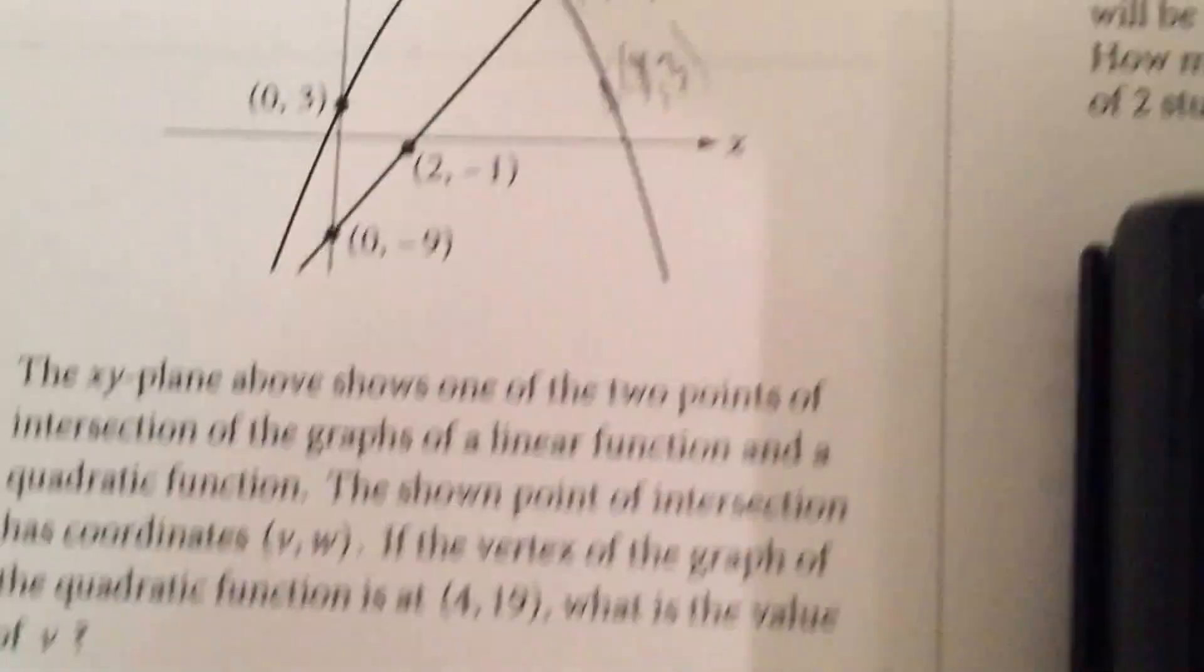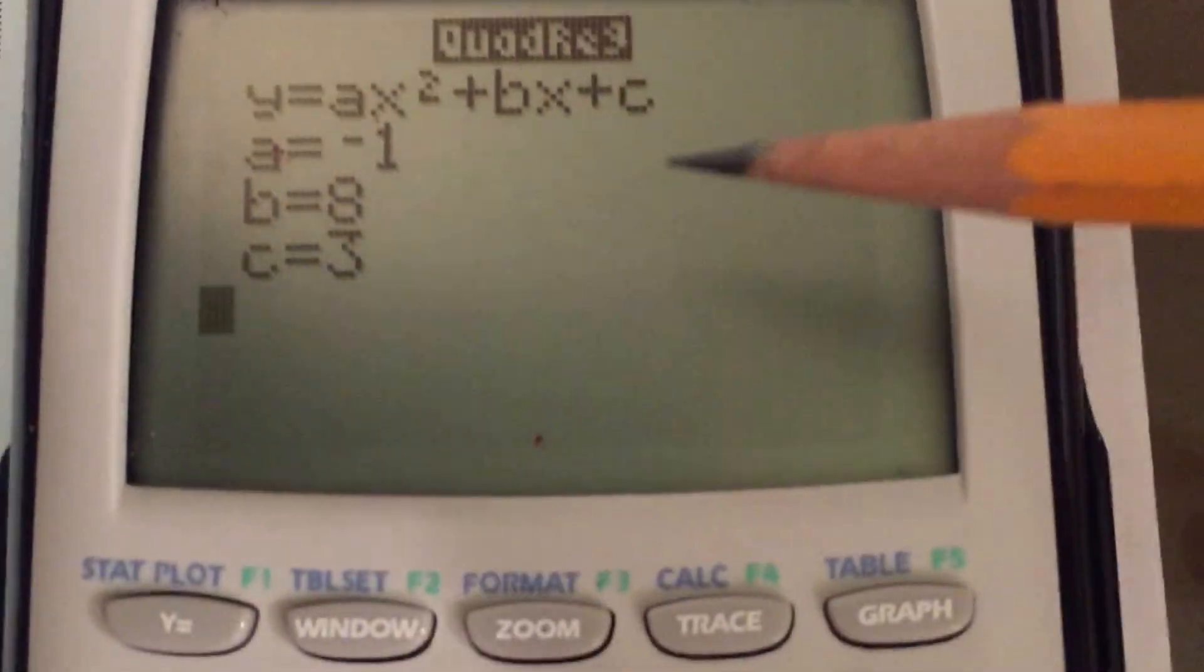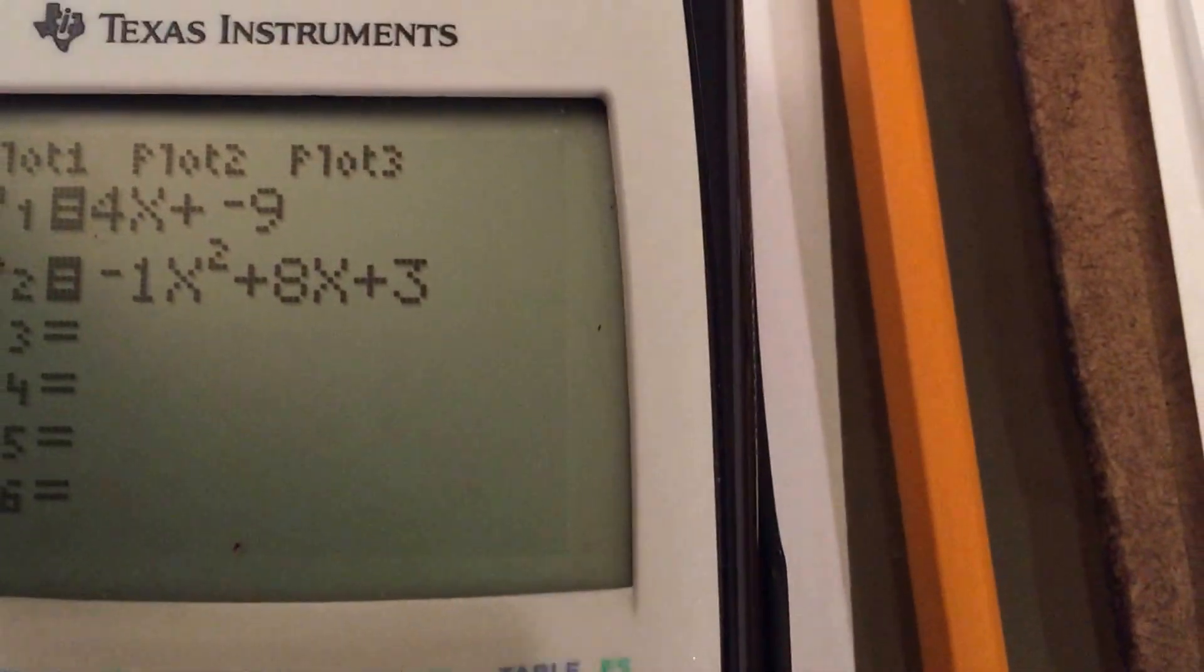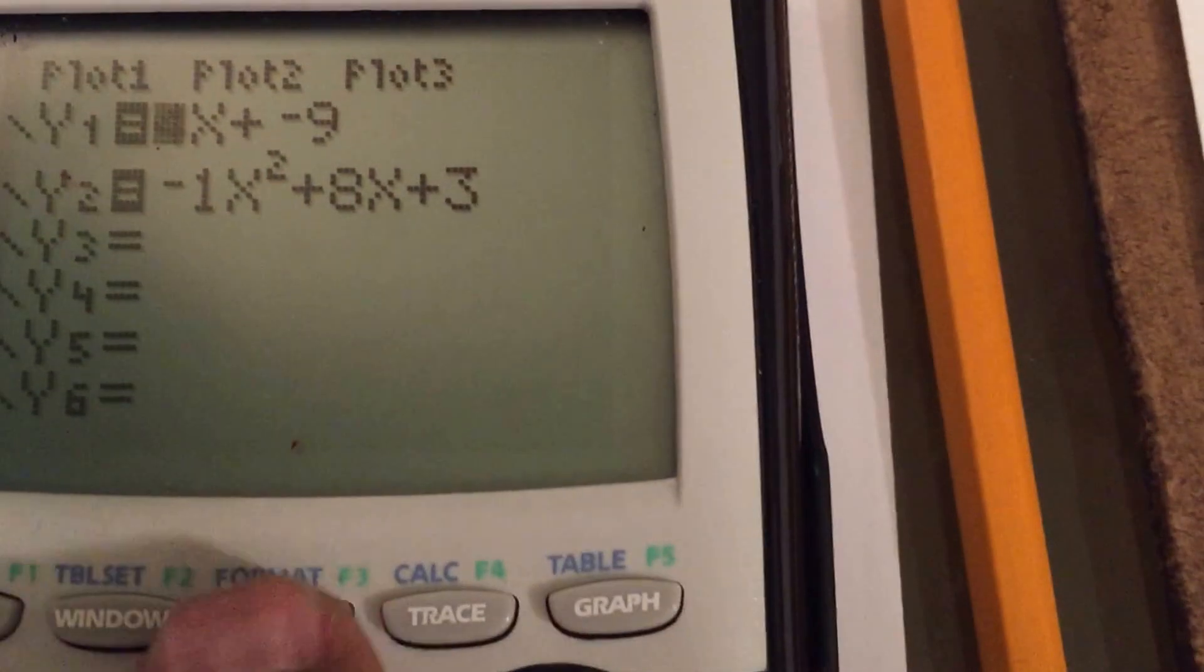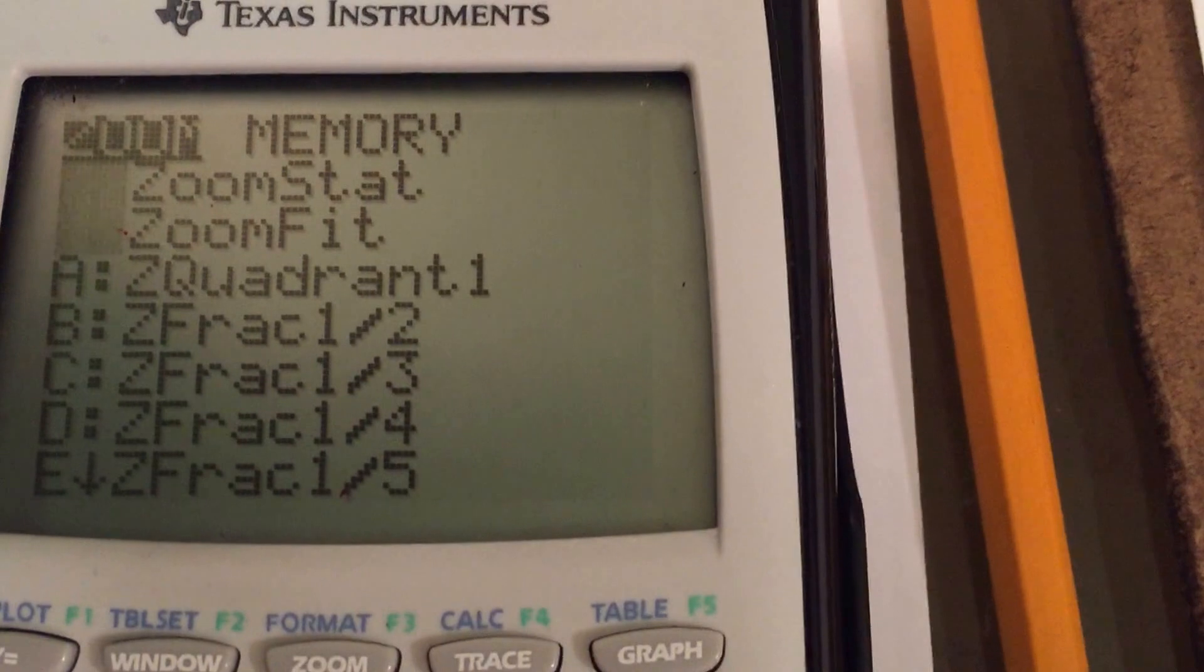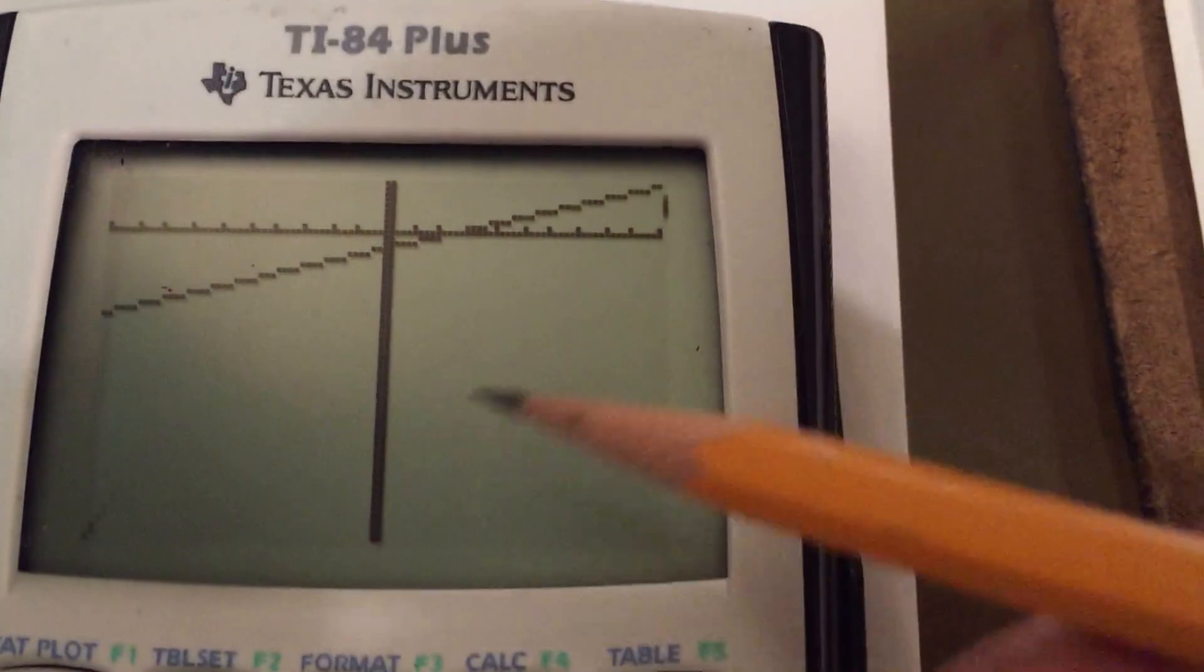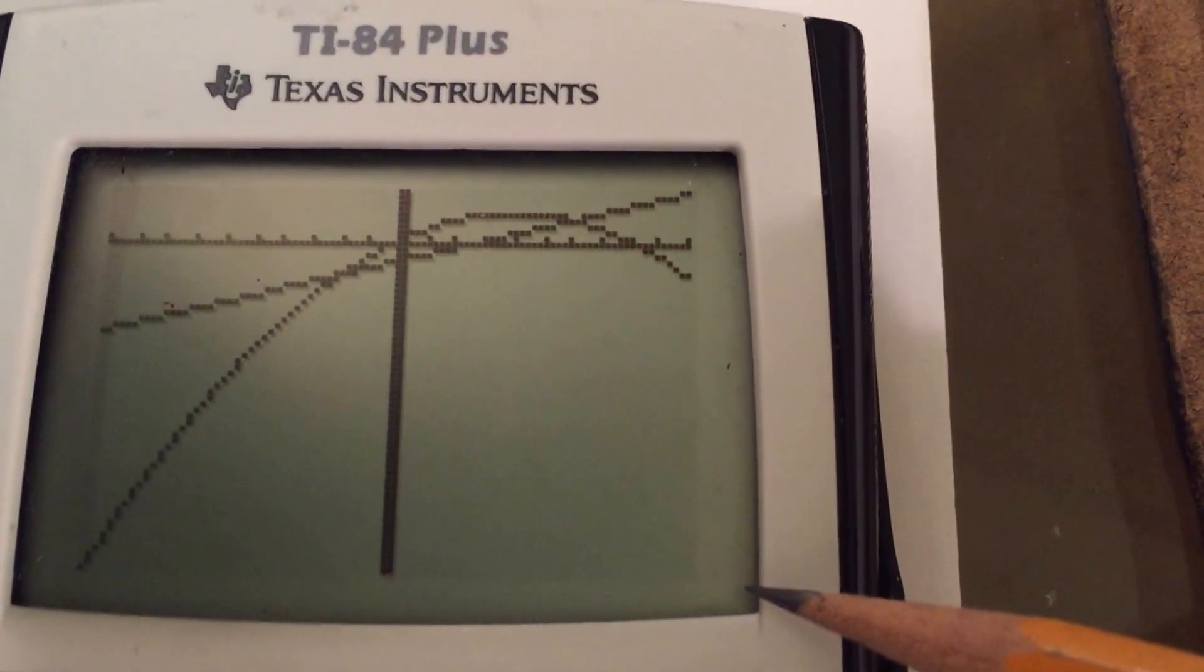And as we would expect, this was an inverted parabola, so we would expect that the leading coefficient on the X squared term would be a negative 1. And it is. So now if you go to the Y equals, you'll see both equations there. Now all we have to do is graph them and find the intersection. So here I'm going to go zoom, and then I'm going to use option 0. Option 0 is zoom fit. Press that. And now it's going to print or graph. There is the line, and here comes the quadratic that we just generated.